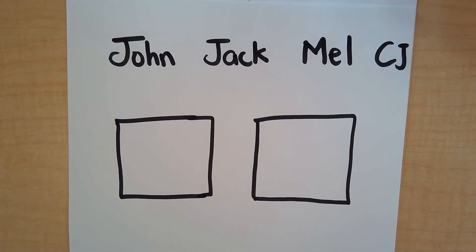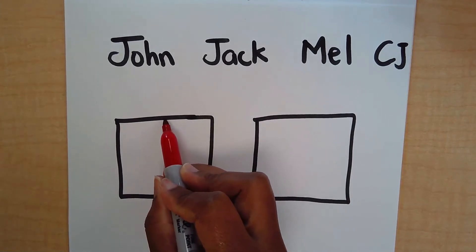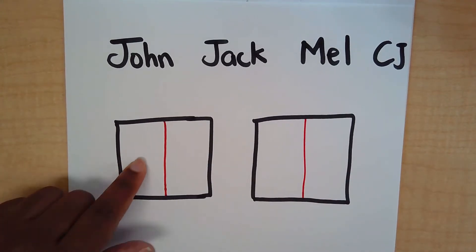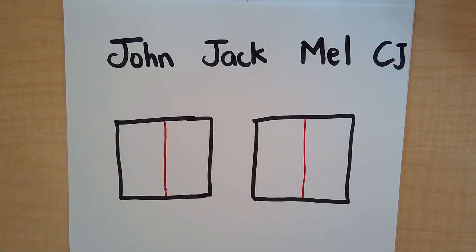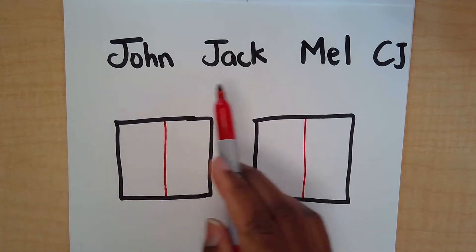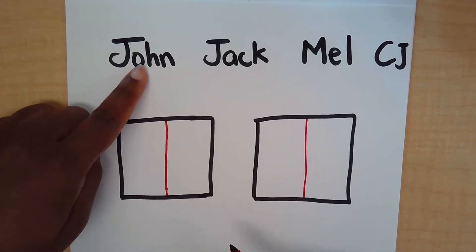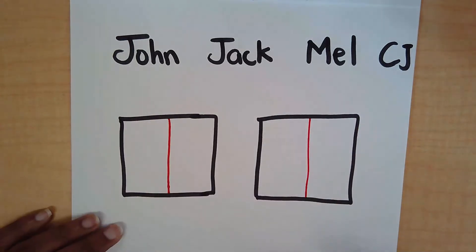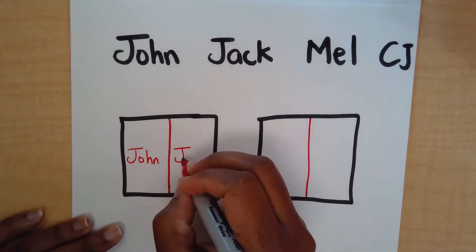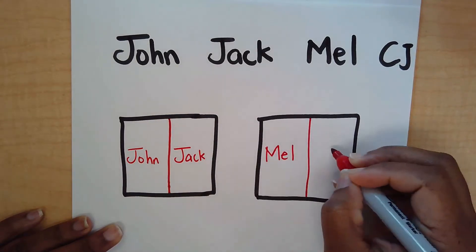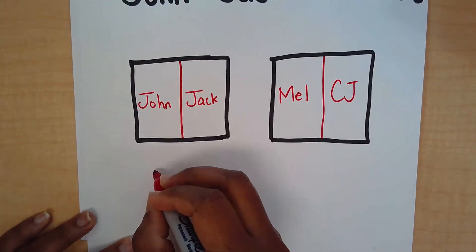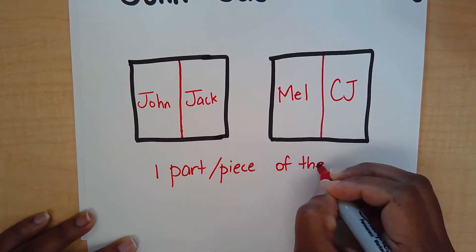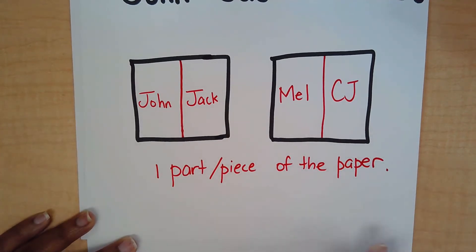So we can start off by cutting the papers in half. Now we have four pieces — one, two, three, four parts. Can we share this equally amongst the four friends? Yes! John can get a piece, Jack can get a part, Mel can get one part, and CJ can get one part. So this would be for John, this for Jack, this for Mel, and this for CJ. Each person has been able to get one part or piece of the paper, and this would be done equally.